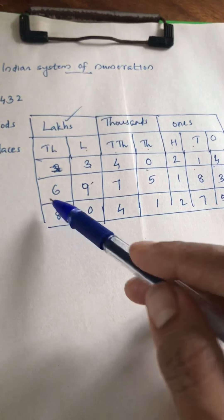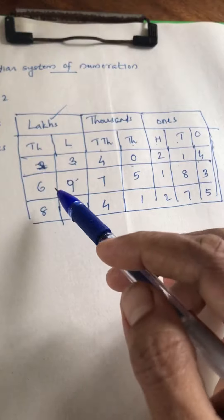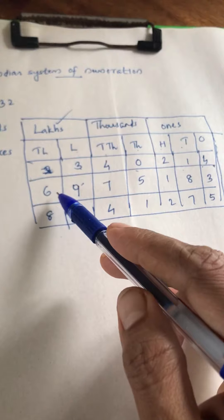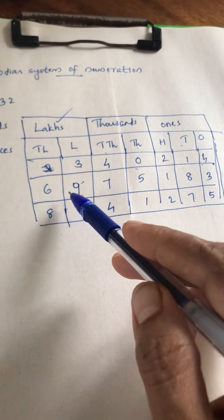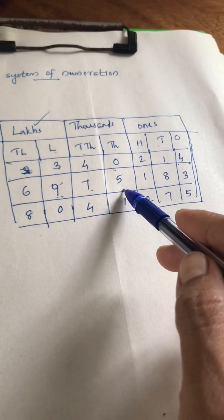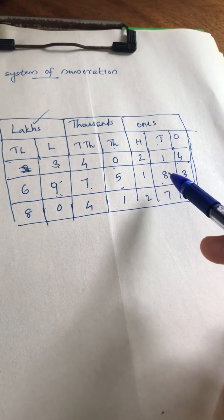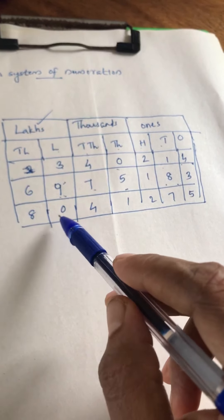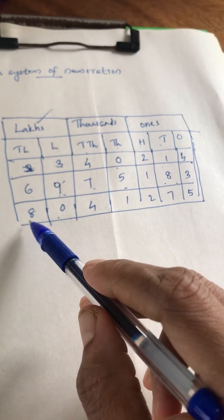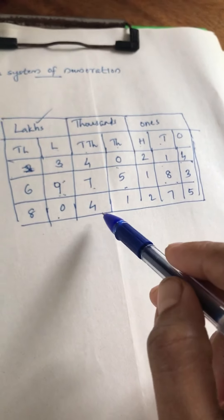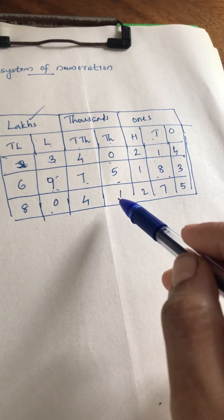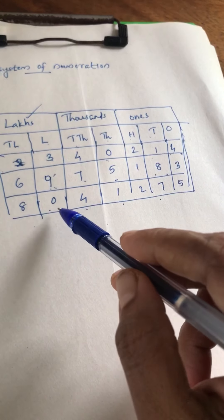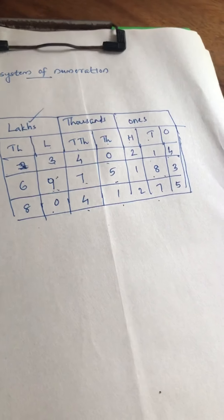Next, if there are seven digits, how do we read it? Here, the last place is the ten lakhs place. So we read: sixty-nine lakhs, seventy-five thousand, one hundred eighty-three. Next example: eighty lakhs, seventy-five thousand, one hundred eighty.